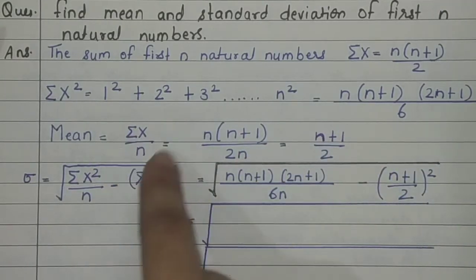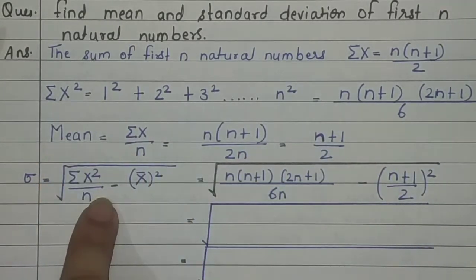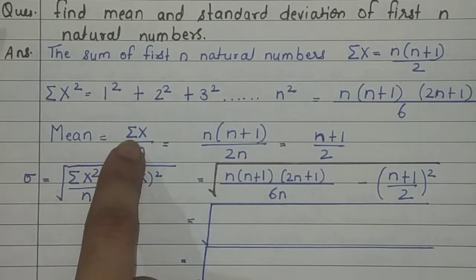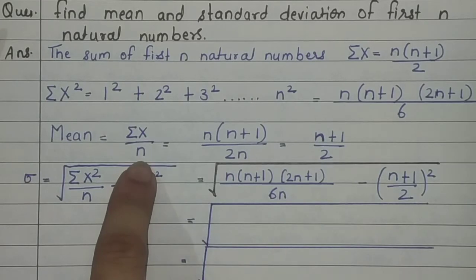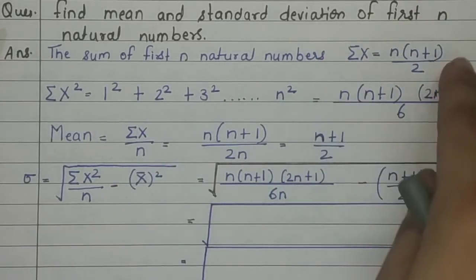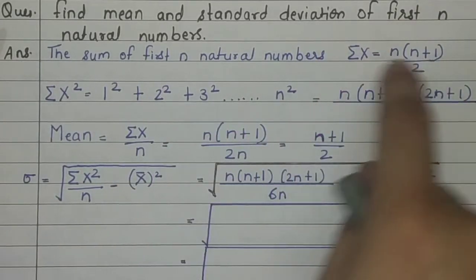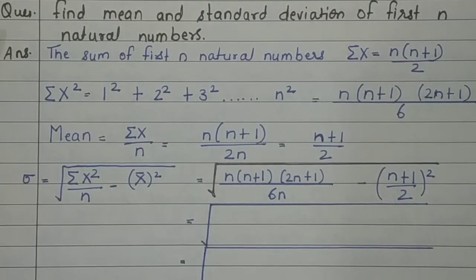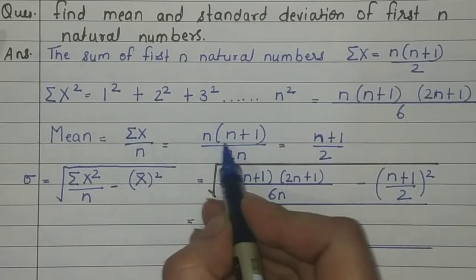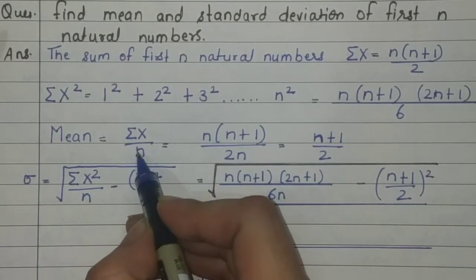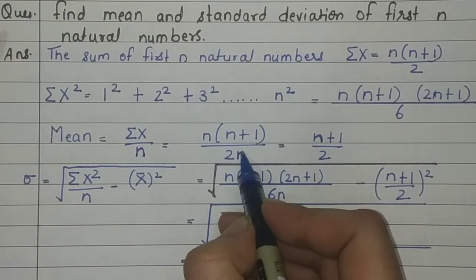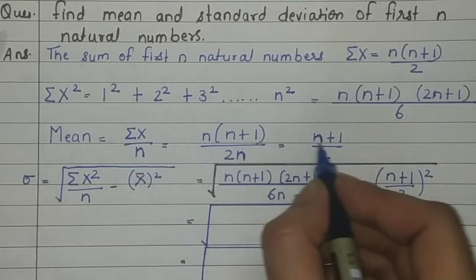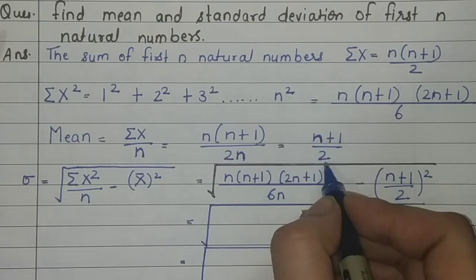As we know, mean = Σx / n. Substituting Σx = n(n+1)/2, mean becomes n(n+1)/2 divided by n. The n's cancel out, giving mean = (n+1)/2. This is Equation 1.